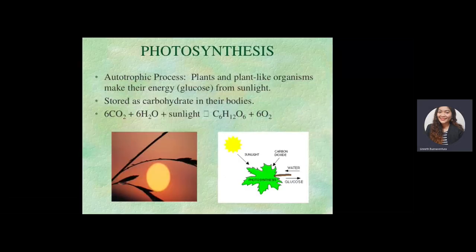Photosynthesis is an autotrophic process — those are plants and plant-like organisms that make their own energy in the form of glucose. Plant-like organisms are any organisms that have the capability to synthesize using the sun, and they are called photosynthetic organisms.